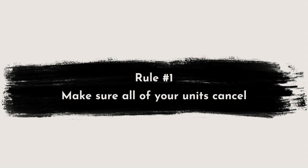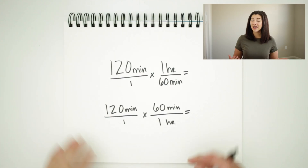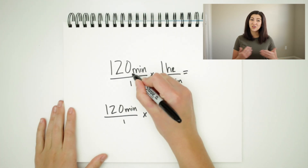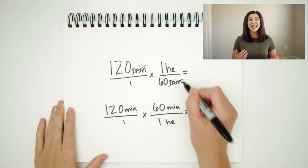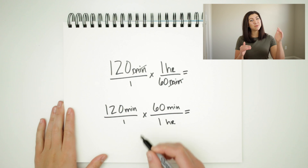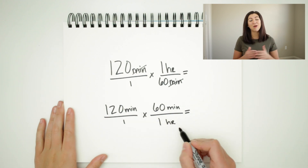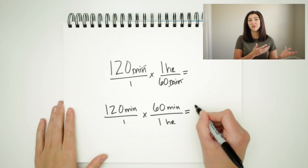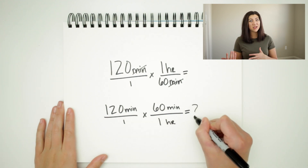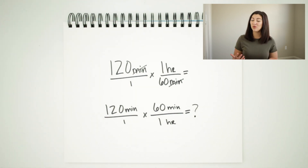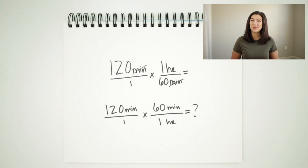The first rule is that all of your units must be able to cancel. If you set up all of your conversion factors and you're not able to cancel out as you move throughout the problem, you know that your answer will be incorrect.